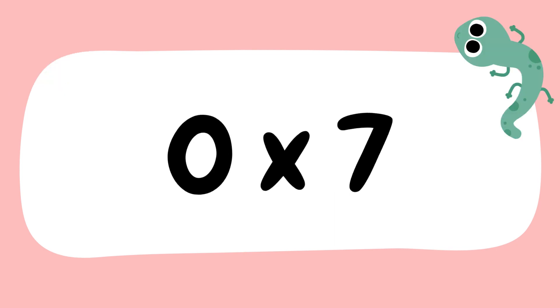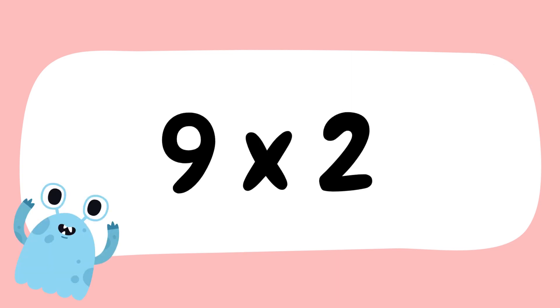Next is 0 multiply by 7. How much will 0 multiply by 7 be? 0. When you multiply zero by any number, it will always be 0. Now, 9 multiply by 2.